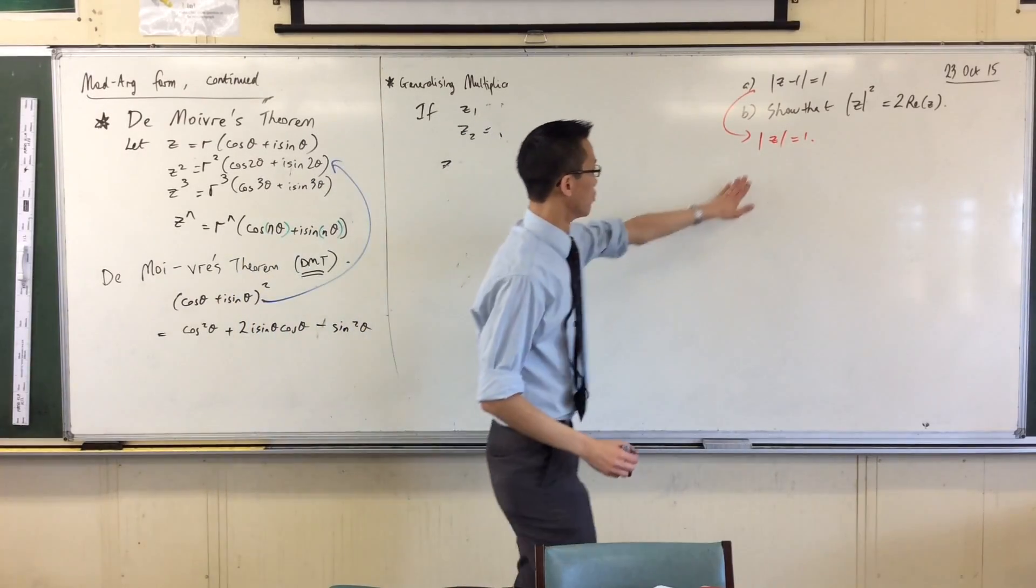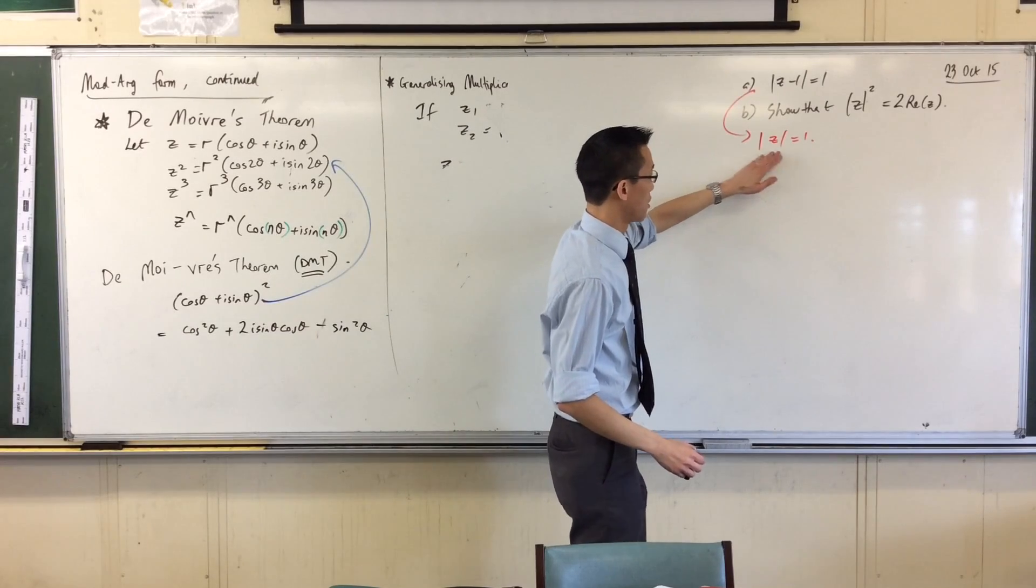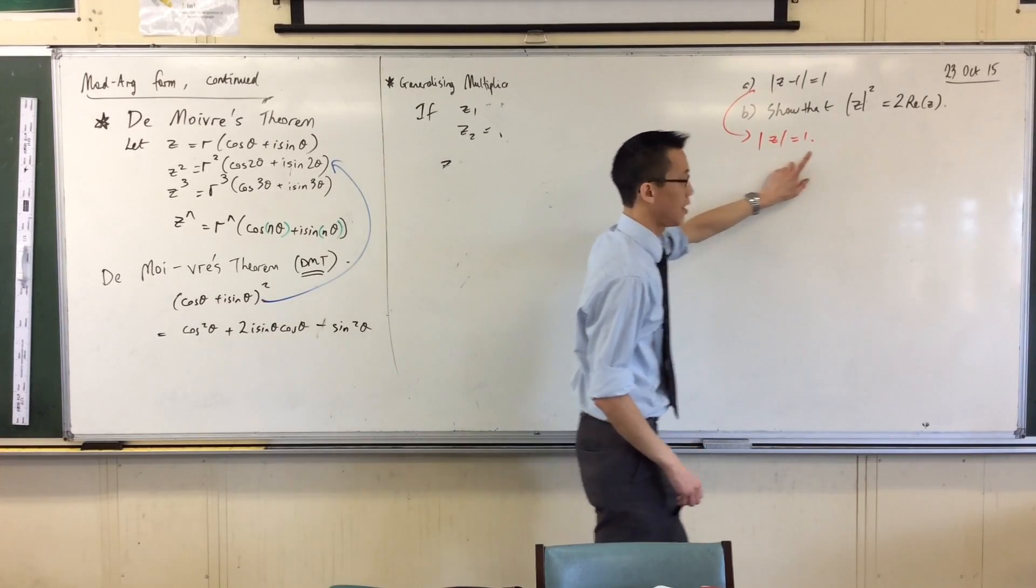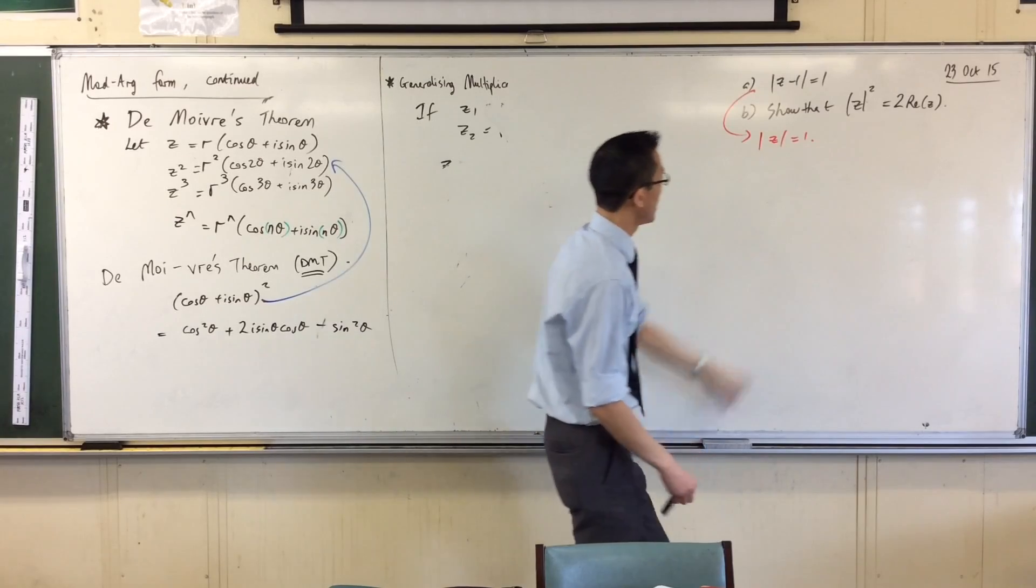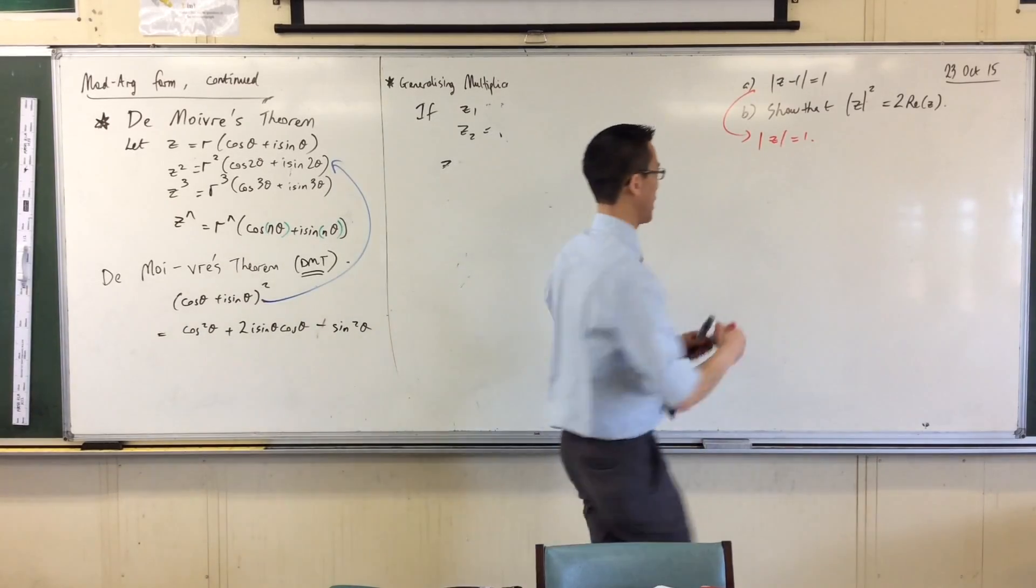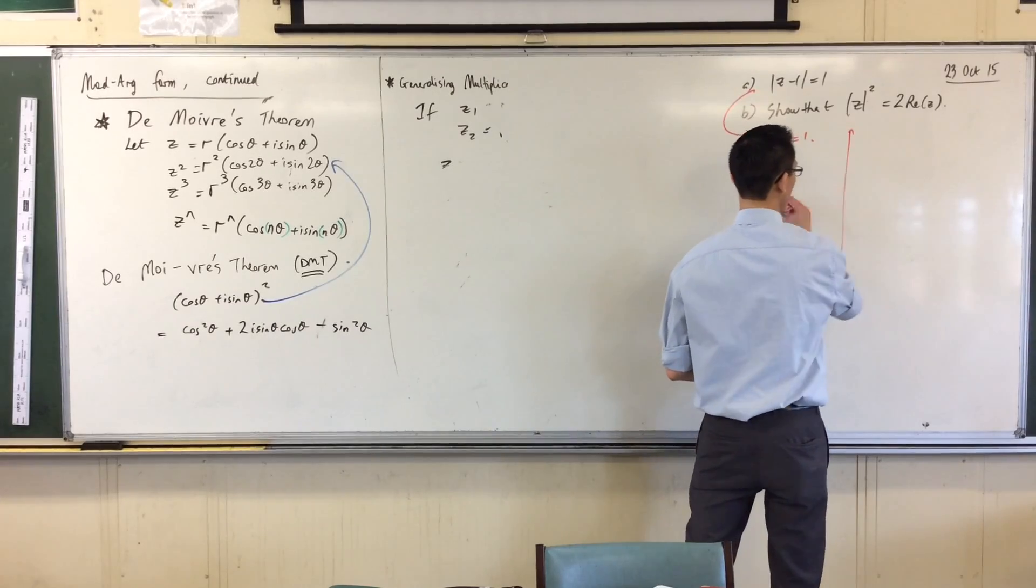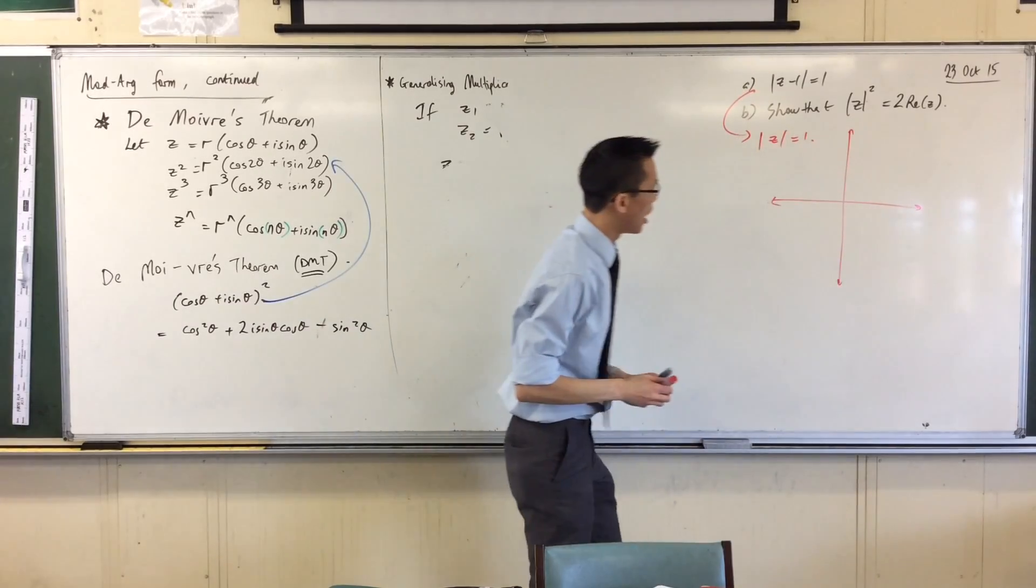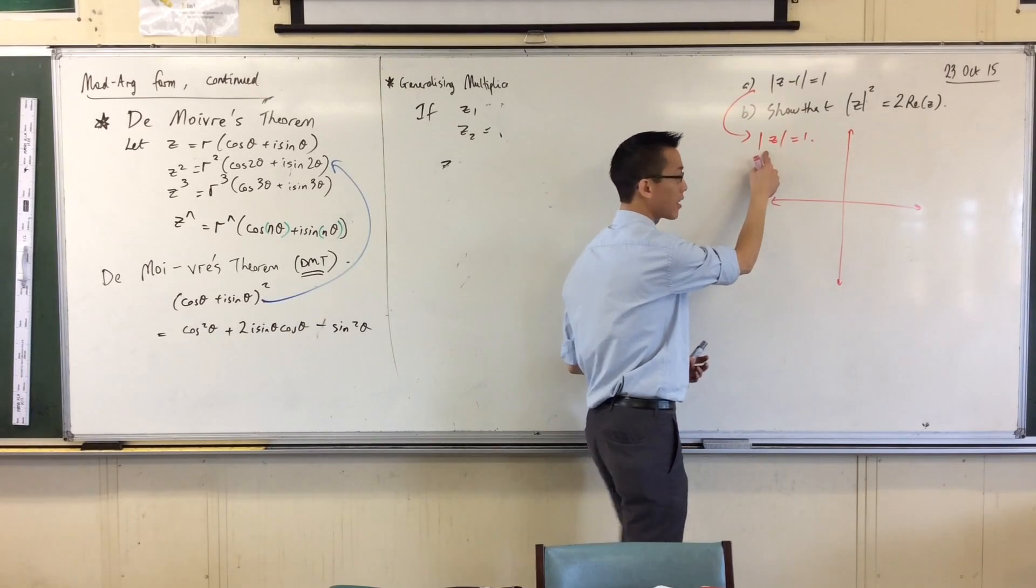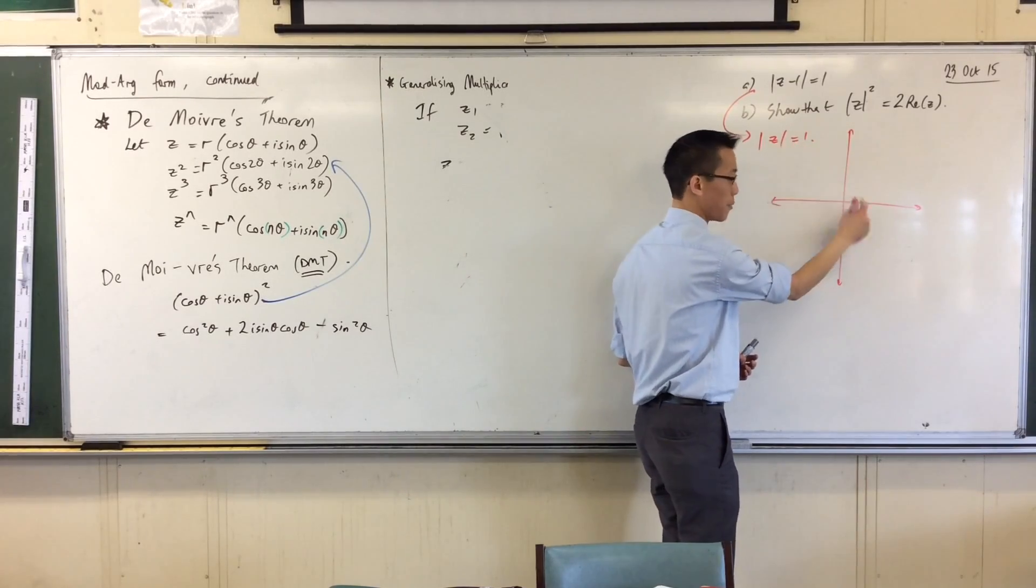What this means is the modulus of z, that's the distance to z, is equal to one. Now hopefully you can think, okay, well if I have a complex plane and I want to know which complex number is exactly one unit away from the origin.